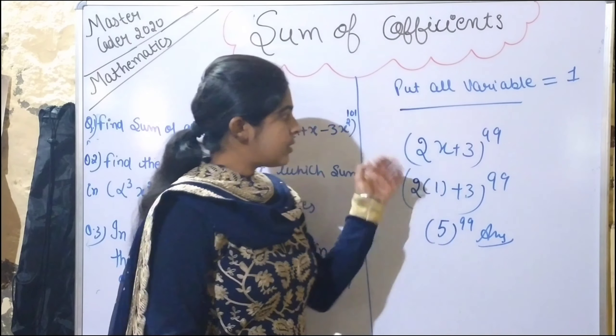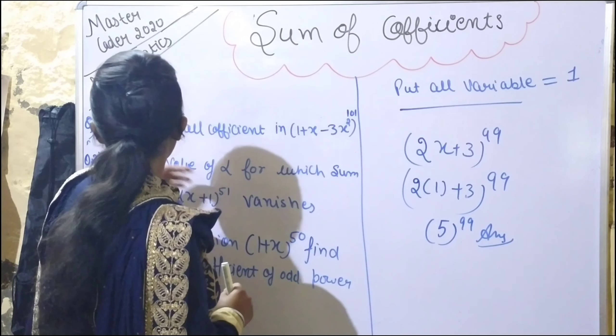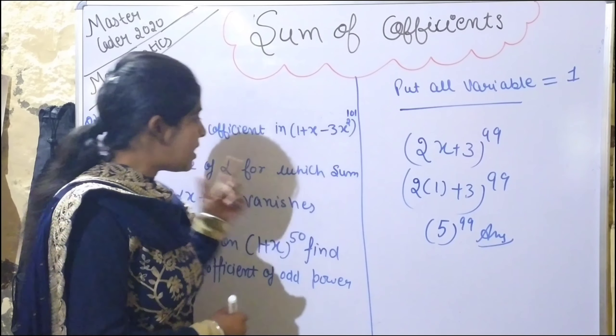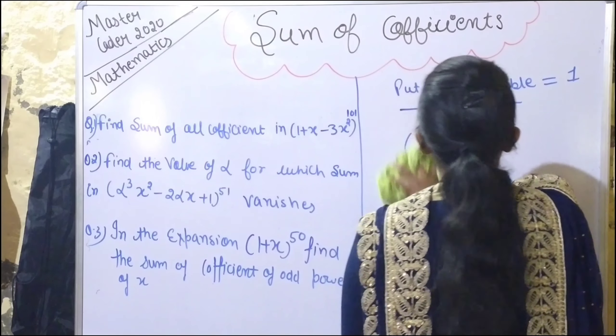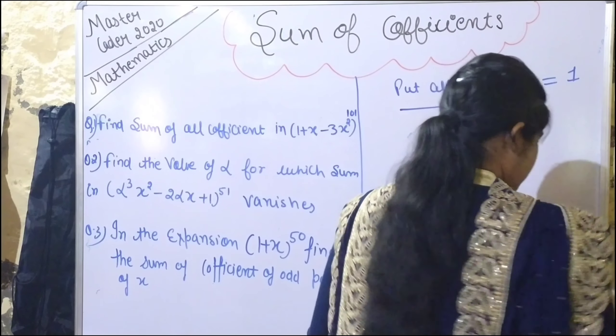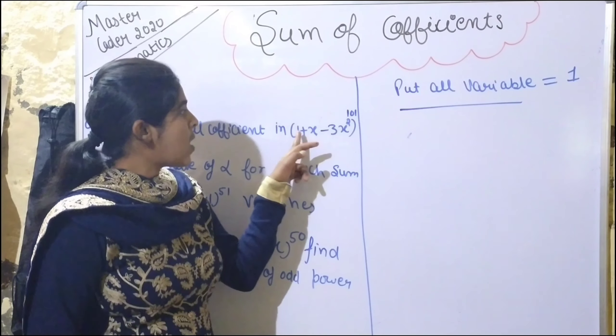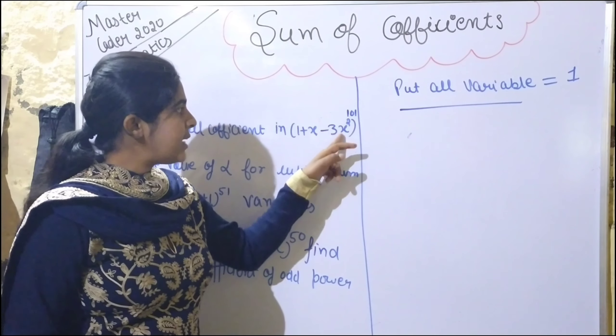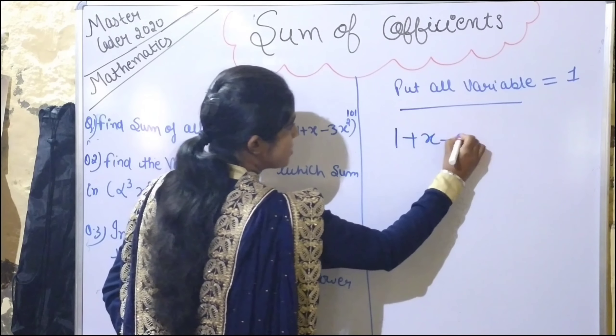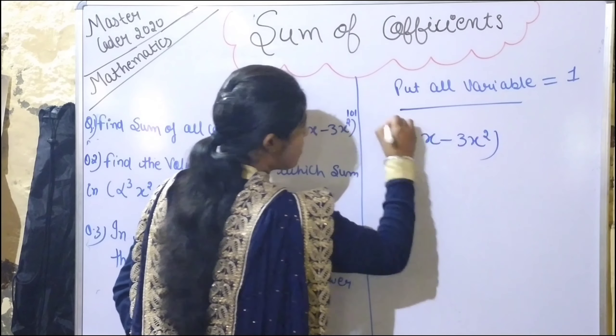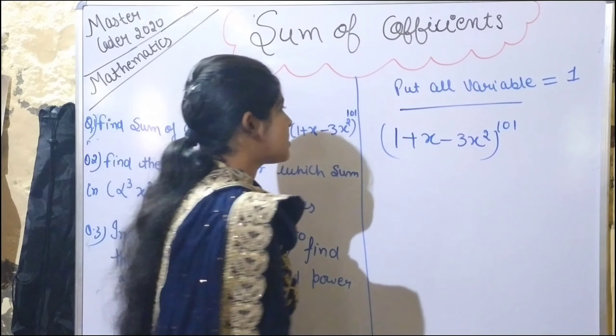You can check the screenshot. Now I will solve these sums so we get some practice. Ten sums we will solve together. Let's find the sum of coefficients in (1 + x - 3x²)^101.